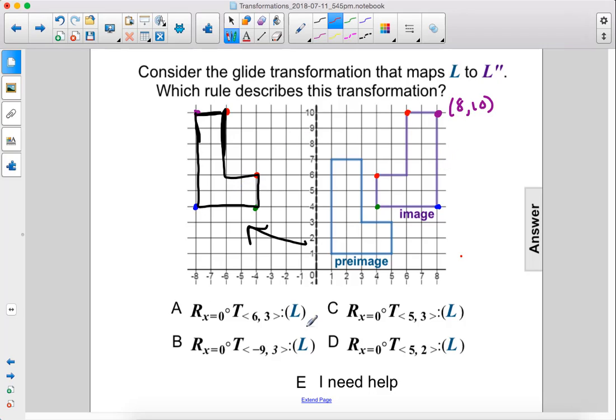So what we want to figure out is what this translation was. So let's take some points - we'll use this point and this point. This point moved over there. It moved nine units to the left, so negative nine, and then it moved three units up. Actually these are like this. Negative nine, three. So our answer is B.